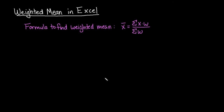The first thing you need to know is that the weighted mean is found by taking the sum of each value times the weight of that value, divided by the sum of the weights. Here I'm using X-bar, which is the sample mean. If you're dealing with the population mean, you would use mu as your symbol.